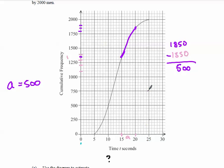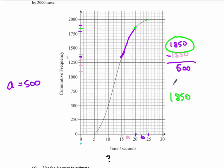Now for B, which covers the interval 20 to 25. The interval starts at the cumulative frequency of 1,850 and ends at the very top of the graph, which is 2,000. The difference between those two values is 2,000 minus 1,850, which is 150. So B equals 150.